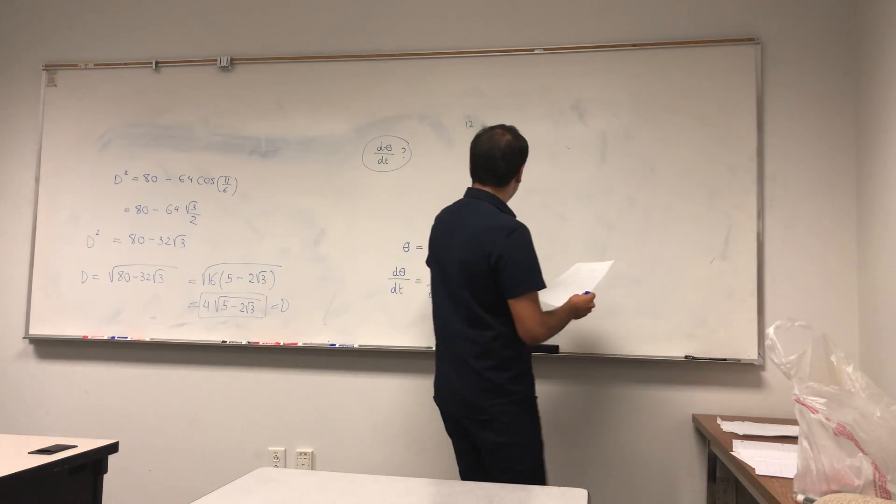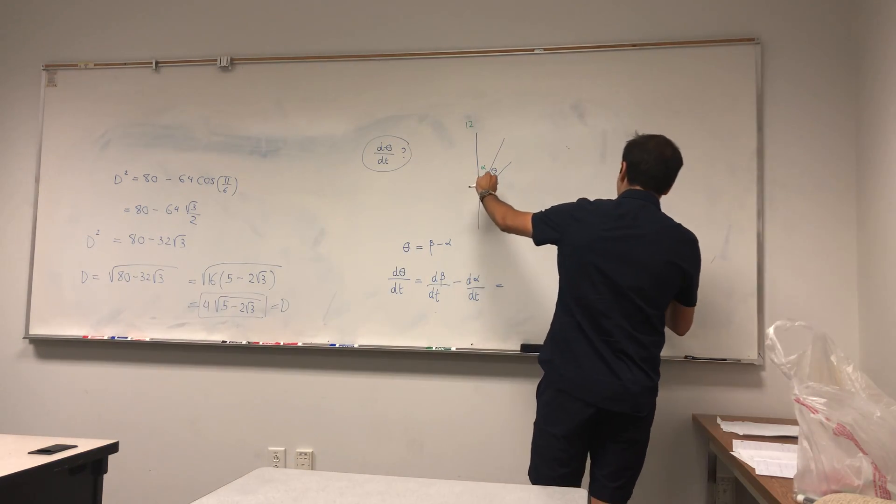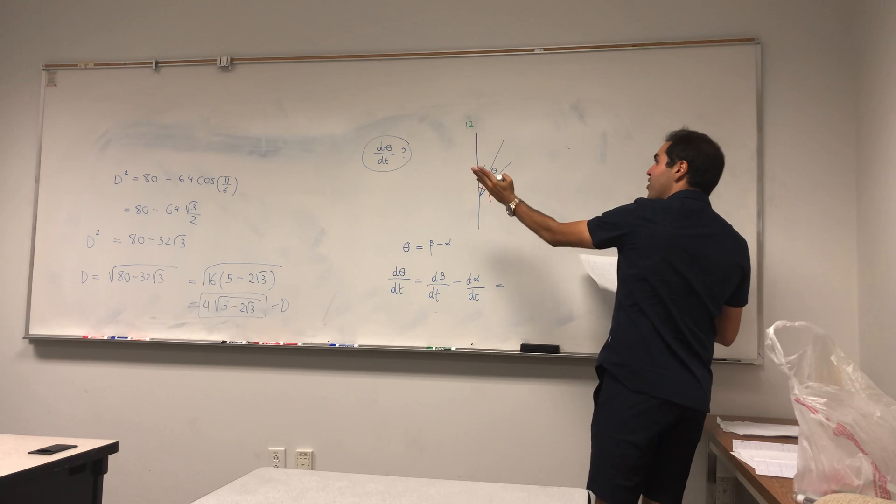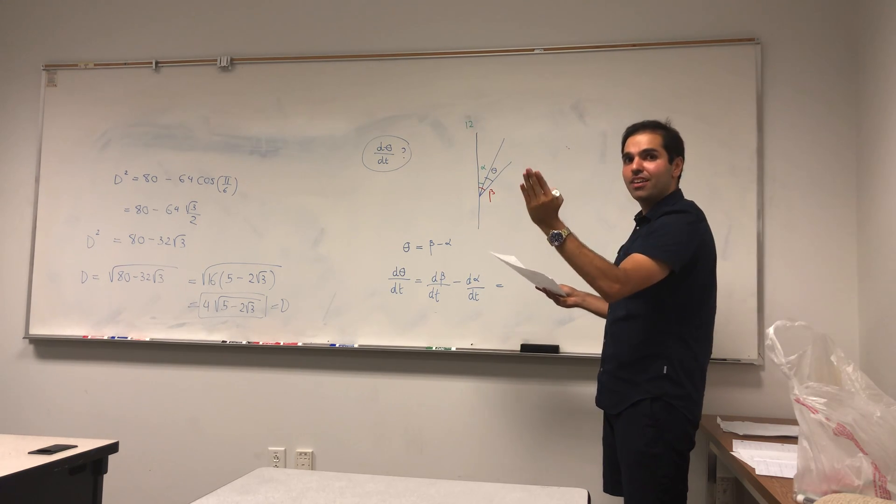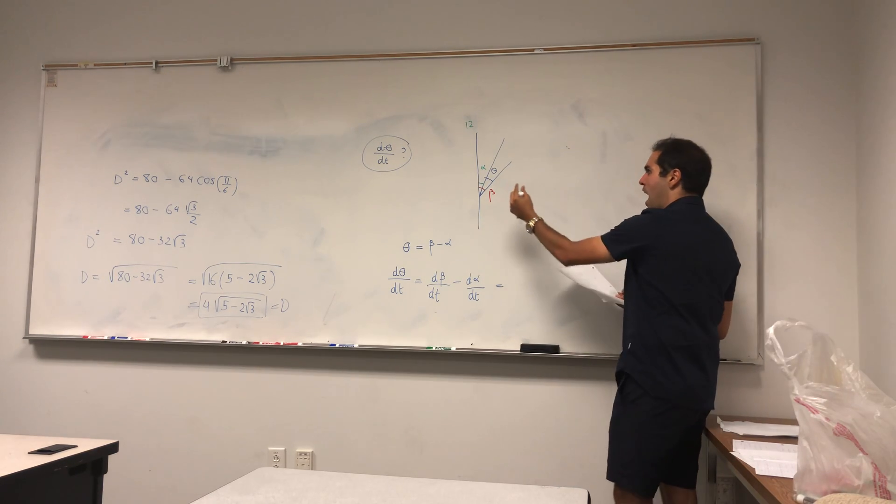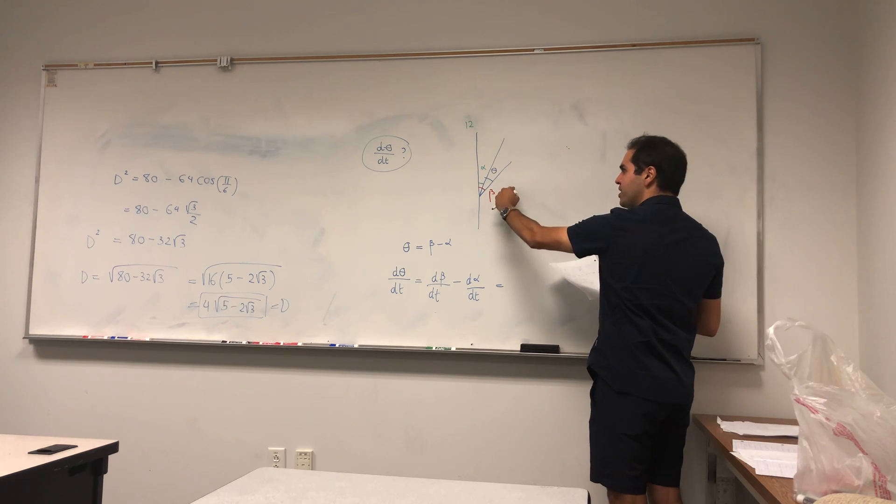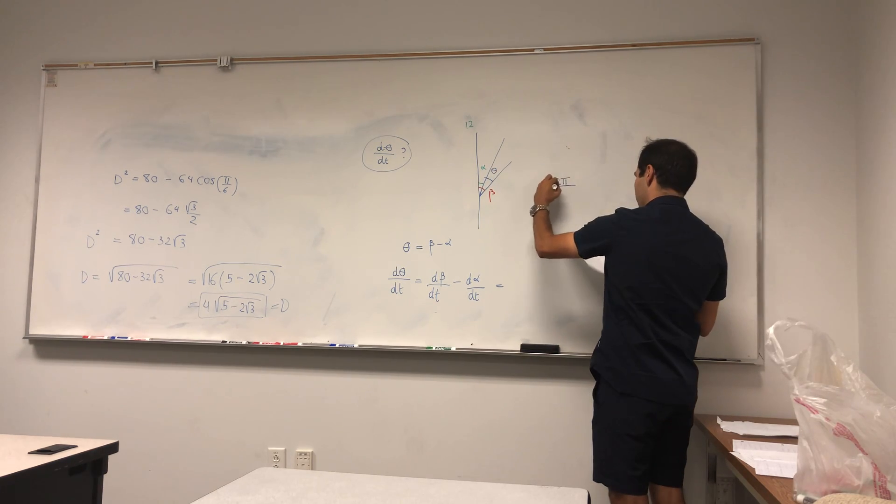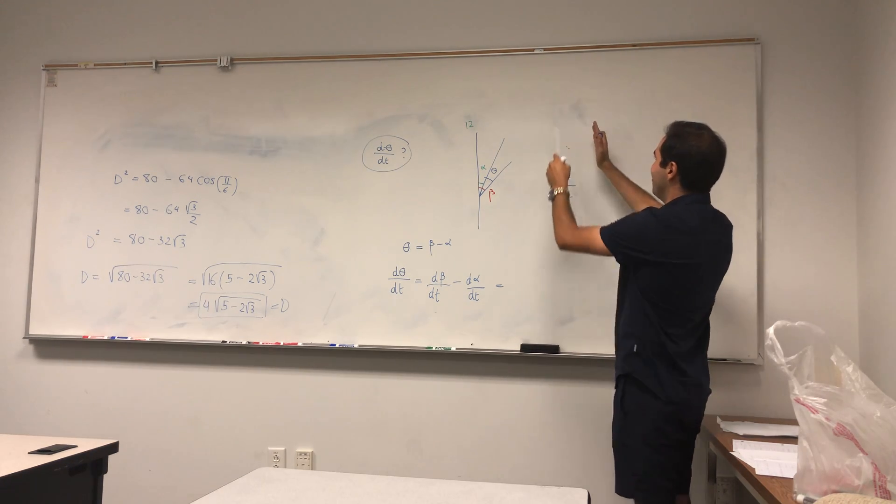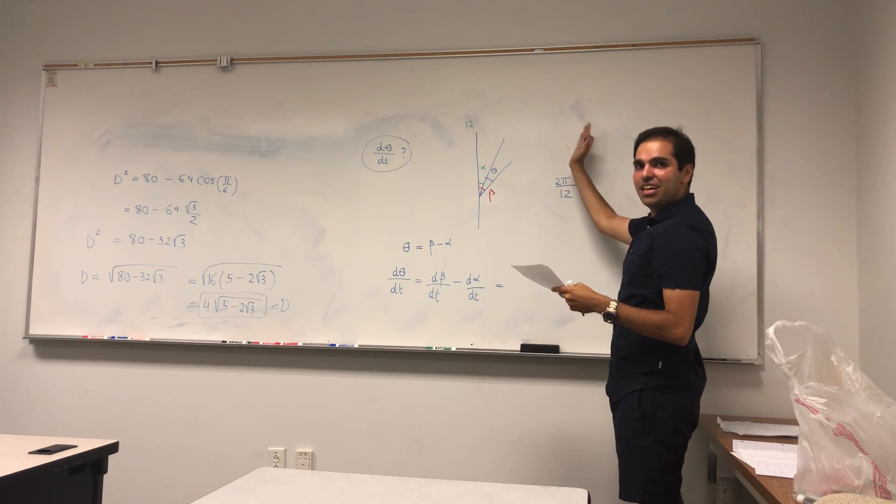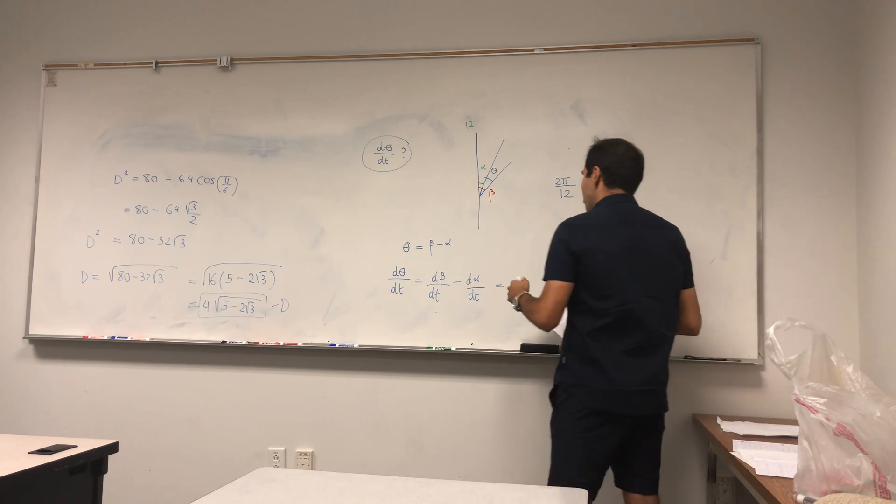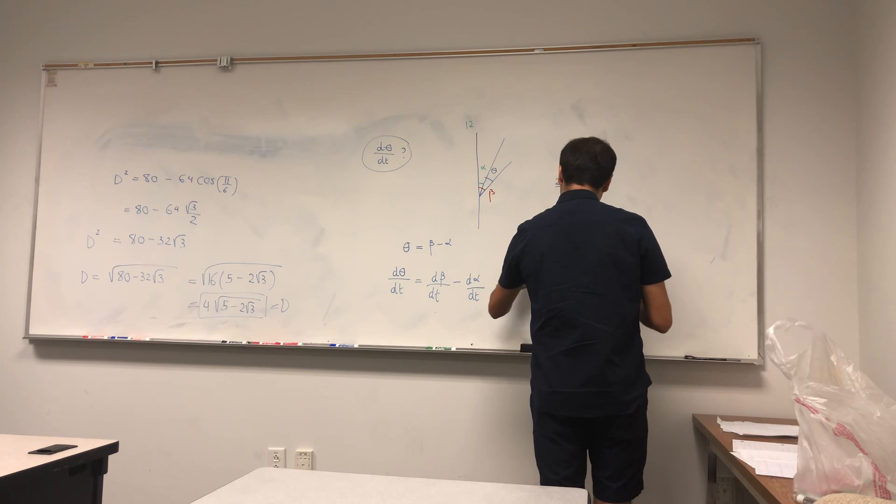And now we have fixed quantities that are better to sort of analyze. So what is d(beta)/dt? It's how the hour clock moves. And remember, we want to have it in millimeters per hour. And so in particular, per hour, beta just increases by 2 pi over 12, because basically every hour the hour hand just increases by a twelfth of the whole 2 pi. So that's 2 pi over 12.